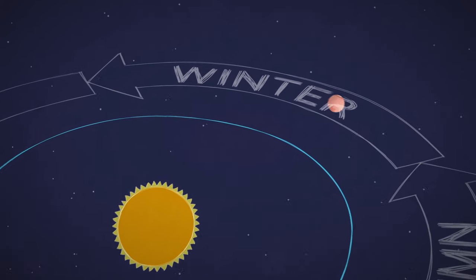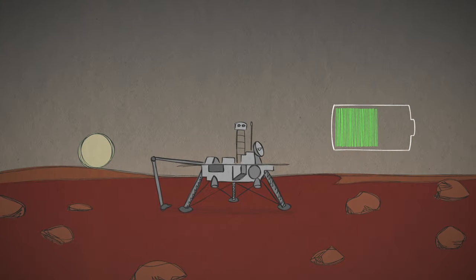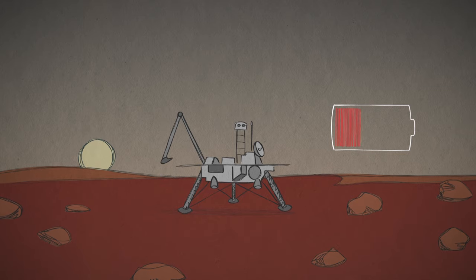Over extended Martian winters, the shorter days and reduced sunlight mean that solar-powered spacecraft sometimes have to carefully conserve their energy.